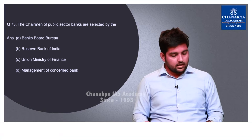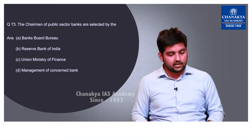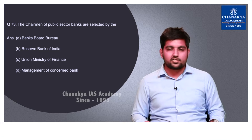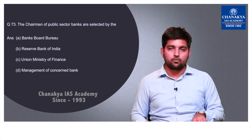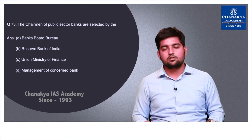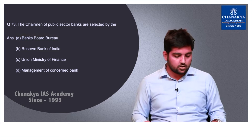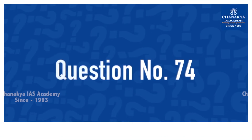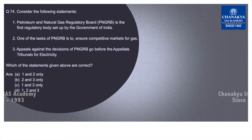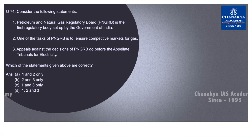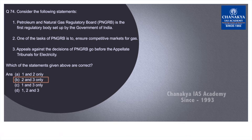Question number 73 is a simple question: the chairman of public sector banks is selected by the Banks Board Bureau. This body was set up in 2016 and recommends chairmen of public sector banks and some private sector banks. The correct option is A. Question number 74 is about the Petroleum and Natural Gas Regulatory Body (PNGRB). The first statement about PNGRB being the first regulatory body set up in India is incorrect. Statements 2 and 3 are correct, so the answer is B.